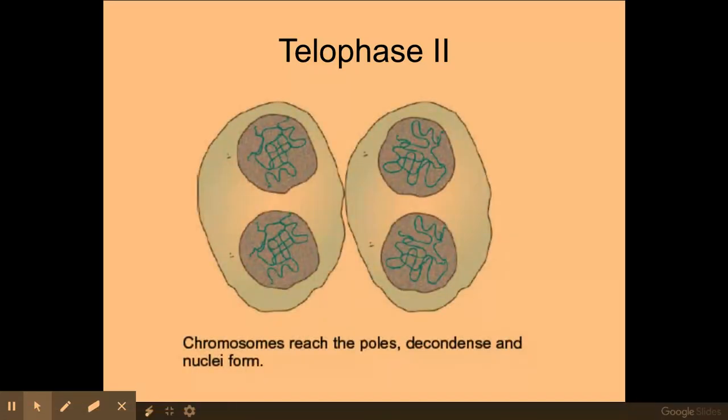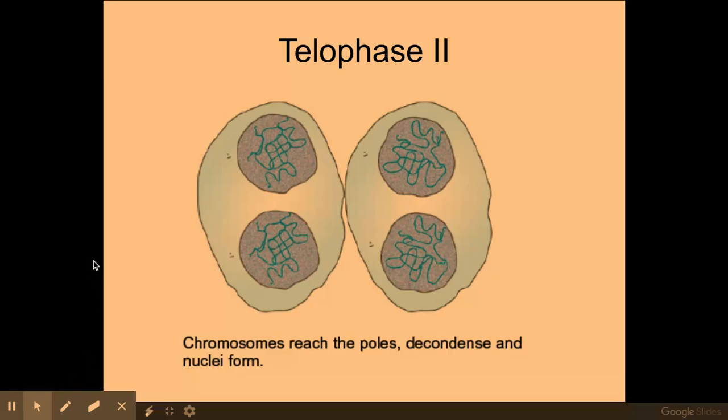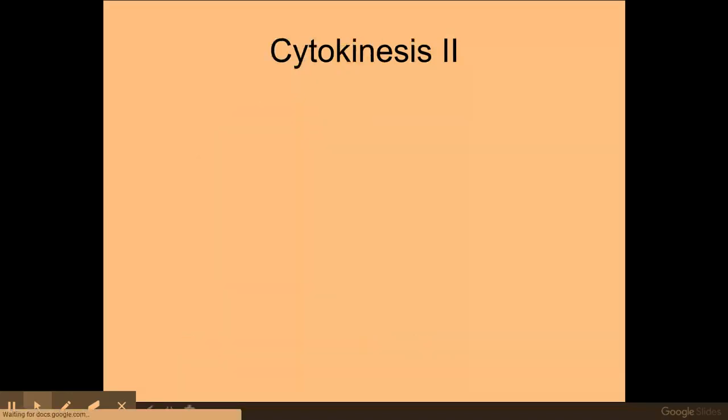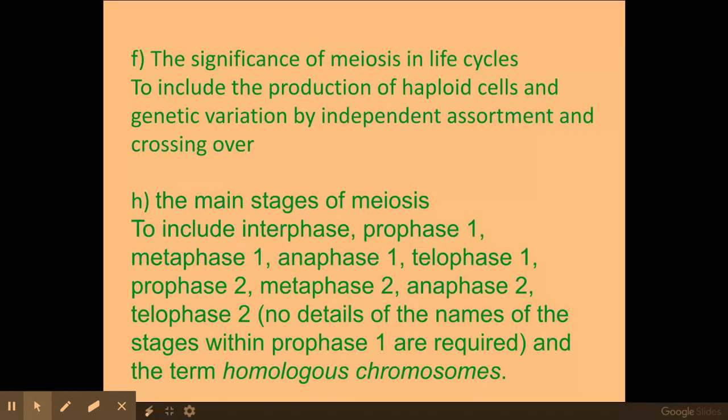Therefore at the end of telophase I will now get four haploid genetically different gametes. So telophase, the DNA will start to uncoil again, my nuclear envelope will start to reform, and eventually my membranes will pinch off in the process of cytokinesis.